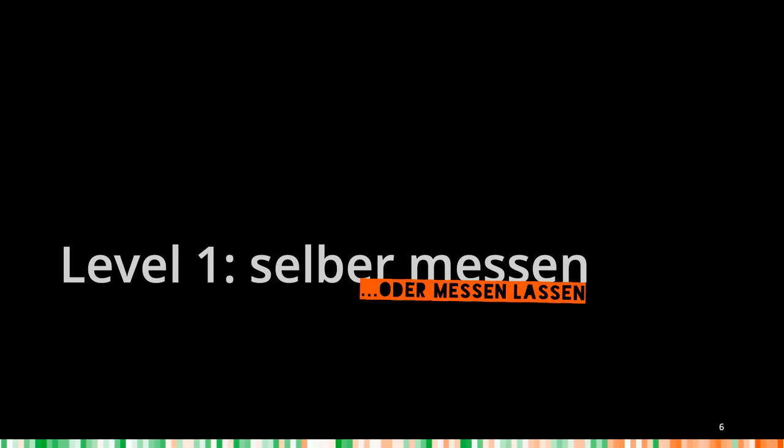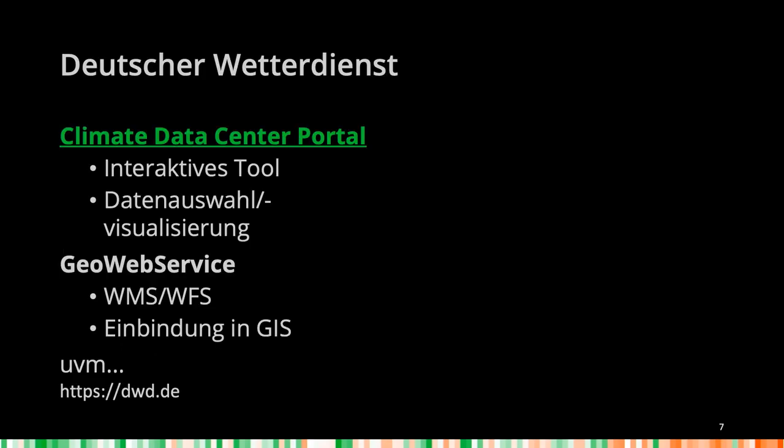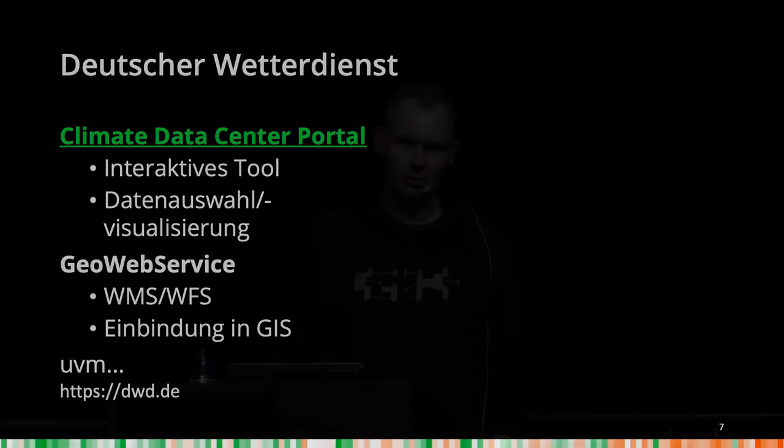Let's start with measuring yourself — it usually works quite well, but usually with Windows PCs. So you have to look: is there maybe someone else who made or measured this data? There's the German Weather Service. They create their own climate models themselves. This is weather data which I can visualize. They distribute it on different channels. The first one is the Climate and Center Portal — it's an interactive web tool. There I can click which parameters I want, click onto a map which station I want, and then I get the data.